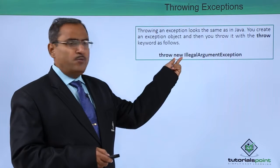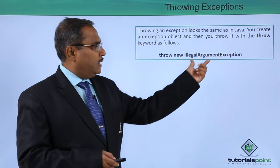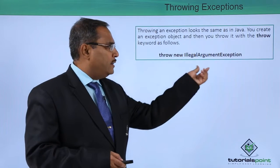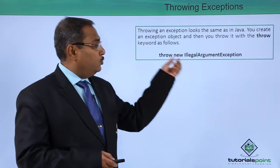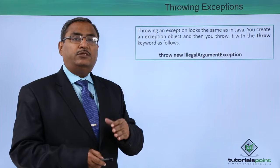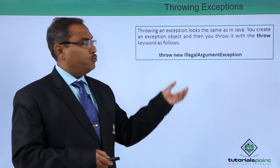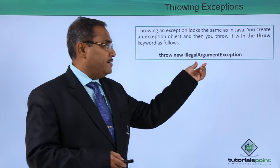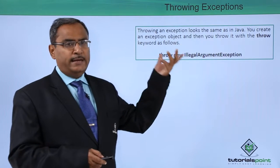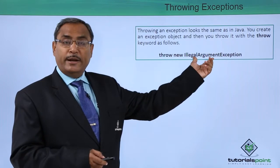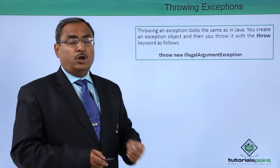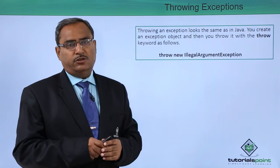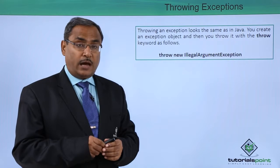The throw keyword is used, then new, creating one object of an exception class — let it be IllegalArgumentException. So a function can throw an exception in this way: throw new IllegalArgumentException, or any other exception class you can mention. This is how a function can throw an exception in Scala coding.